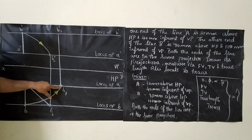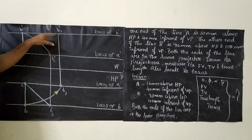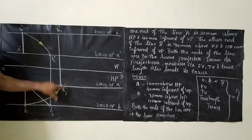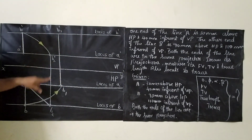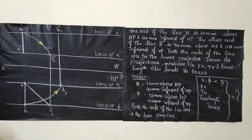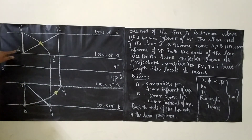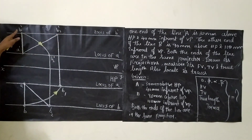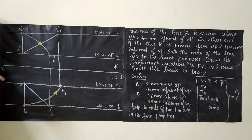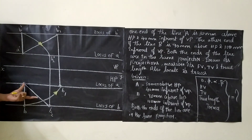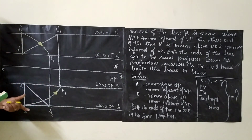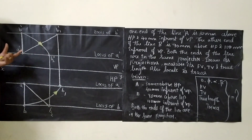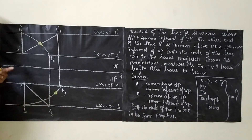From point B1, extend this line vertically above till locus of B' dash, and name that point as B1 dash. Now join A' dash and B1 dash — so A' dash B1 dash is your true line, and A' dash B1 dash will be your front view. Whatever length you get for AB2, the same length you will get for A' dash B1 dash. So true length A' dash B1 dash equals AB2 — they will be the same.